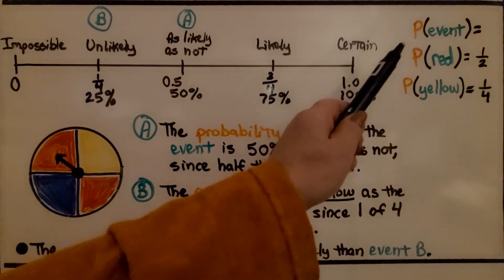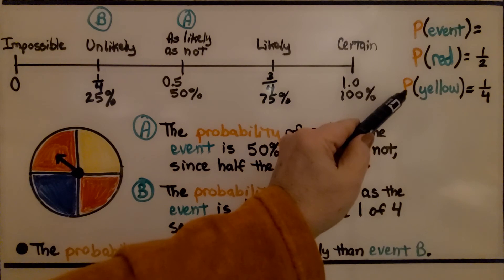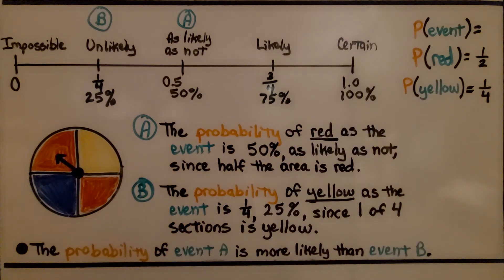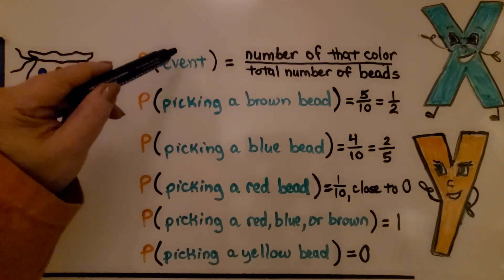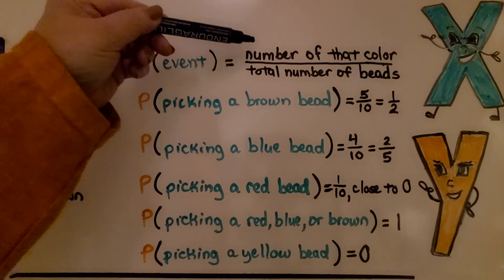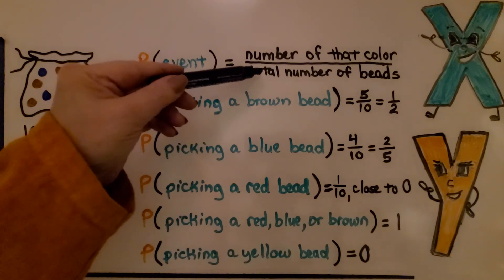For the probability of the event, the probability of red is half and the probability of yellow is one fourth. Here we have a bag that contains 10 beads. There's one red, four blue, and five brown. We can write the probability of the event of picking the different colors. The numerator is going to be the number of that color in the bag, and the denominator is going to be the total number of beads in the bag.